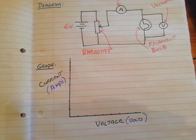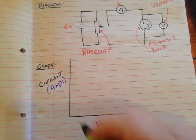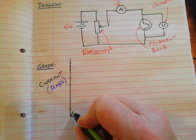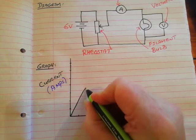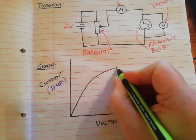Now the shape of the graph is very interesting. The shape of the graph starts off, looks like it's a straight line, but as it goes up, it starts curving.